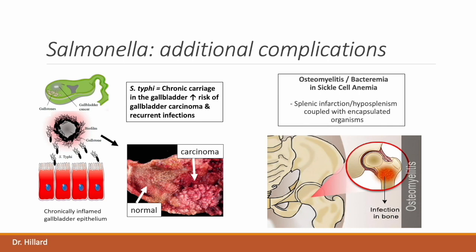A complication of chronic Salmonella infection is the development of gallbladder carcinoma or cholangiocarcinoma due to chronically inflamed gallbladder epithelium. In general, when there is long-term chronic inflammation, there is increased risk for neoplasia. Another complication in Salmonella infections is infectious osteomyelitis and bacteremia. Individuals with sickle cell anemia have a greater propensity for such infections due to hyposplenism and/or splenic infarction, which makes the body unable to fight off encapsulated organisms such as Salmonella. Sickle cell disease can also cause ischemic injury within the bowel, leading to compromise of the barrier and a greater propensity for bacteremia and osteomyelitis.